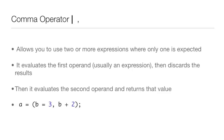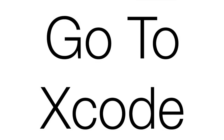The next operator is the comma operator. The comma operator allows you to use two or more expressions where only one is expected. It evaluates the first operand — usually the first one is an expression — discards the results, then evaluates the second operand and returns the value. As you can see, we have variable a and we set b equals 3, comma b plus 2 in the value of a. So a equals 5 because we set b to 3 and then added 2 to b. We're going to go into Xcode and write a few lines of code to get a good grasp of this.